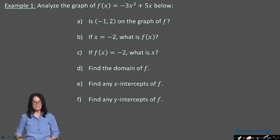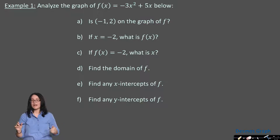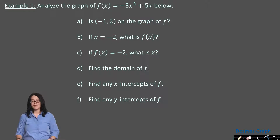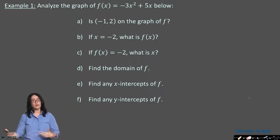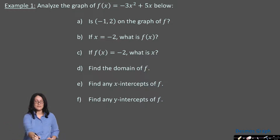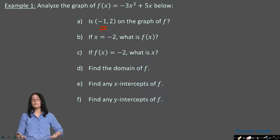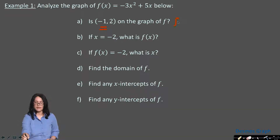Let me clear that and go to Example 1. Here, instead of a graph, I've given you the equation of the function. I've also provided a link to the Desmos graph in the notes. The function is f of x equals negative 3x squared plus 5x. Can you think about what kind of graph this would be? It's a parabola — in fact, a parabola opening down because the leading coefficient is negative. The first question asks: is the point (−1, 2) on the trajectory?